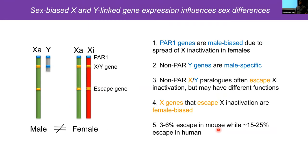Despite dosage compensation, some genes remain expressed from the inactive X — these are called escape genes. There are several types: PAR genes (pseudoautosomal region — a region of homology between X and Y), which are often male-biased in expression; non-PAR Y genes that are male-specific; non-PAR X and Y paralogs that often escape X inactivation; and X-specific genes that escape X inactivation, which are often female-biased. In mouse, about 3–6% of X-linked genes escape X inactivation; in human, that number jumps to about 15–25%.